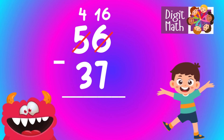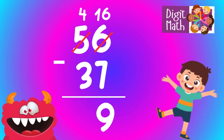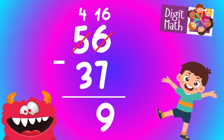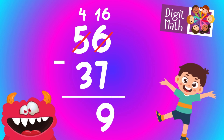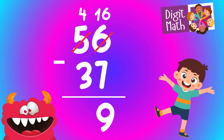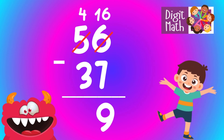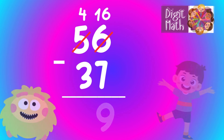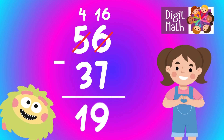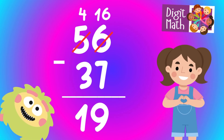In the tens column, we now have 4. Subtract 3 from 4, which equals 1. So the final result is 56 minus 37 equals 19.